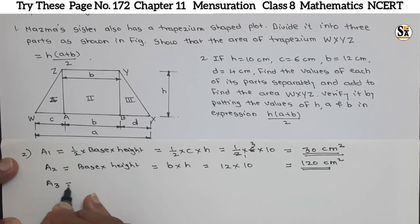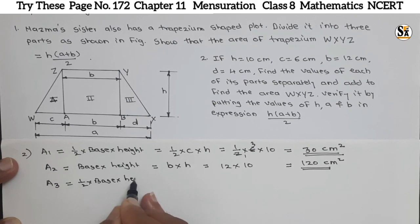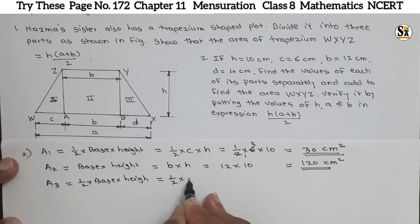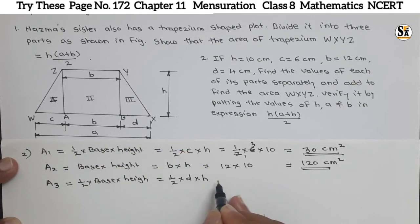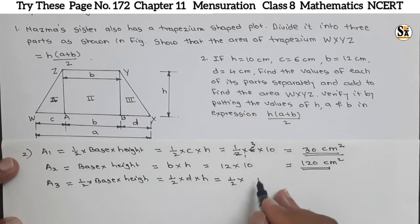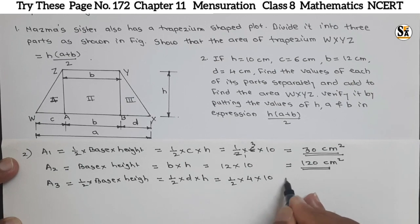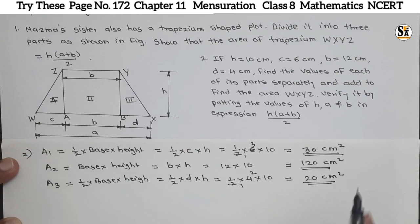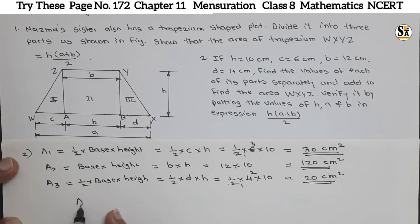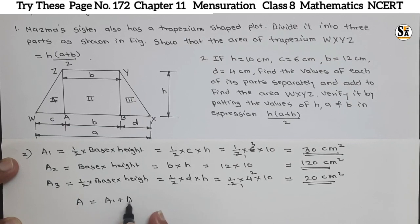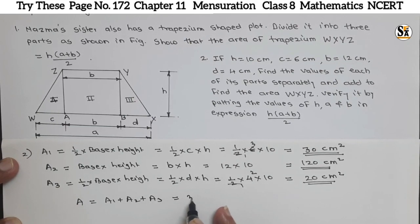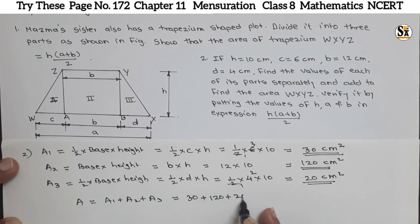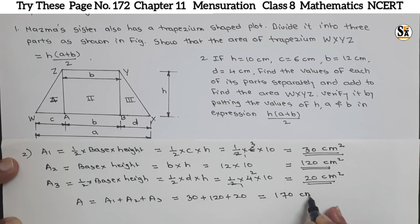A3 is again triangle area, that is 1/2 into base into height. Base is D. So 1/2 × D × H. D is given as 4 cm and height is common, 10 cm. So A3 = 1/2 × 4 × 10 = 20 cm². We have got all three areas. So the total area of the trapezium = A1 + A2 + A3 = 30 + 120 + 20 = 170 cm².